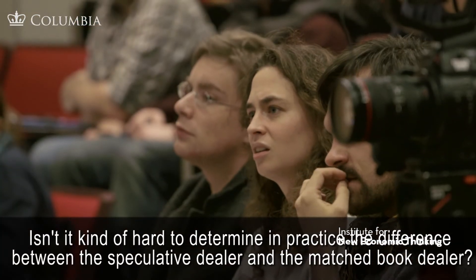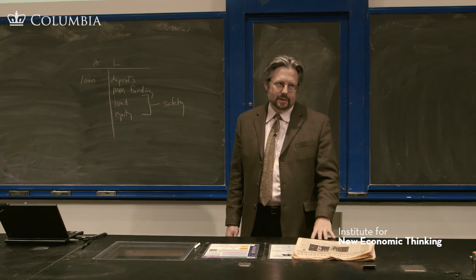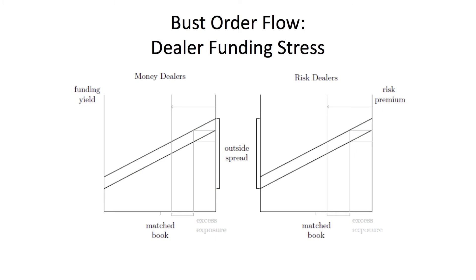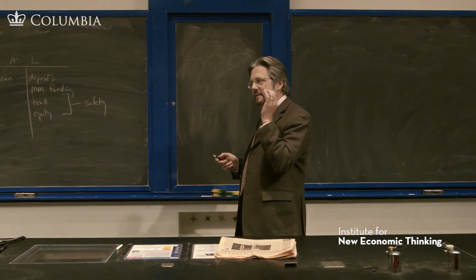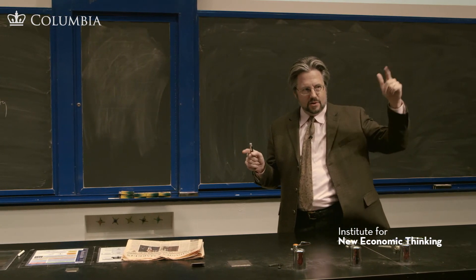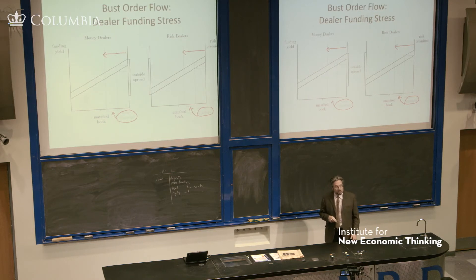Yes, you can't draw a sharp line between them, so you're probably going to have capital for the matched book dealers too. Having adequate capital to absorb losses is key. The other thing this picture reminds us is that the role of the central bank should be creating the outside spread, not the inside spread. The role of the modern central bank is to ensure freely but at a high premium — to put a floor under capital markets, but at 80 cents on the dollar — making it very uneconomic.